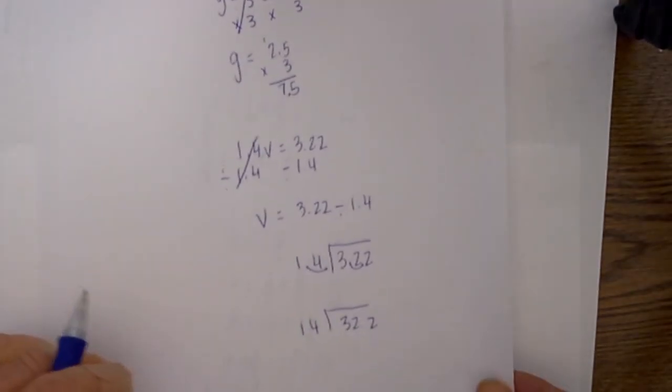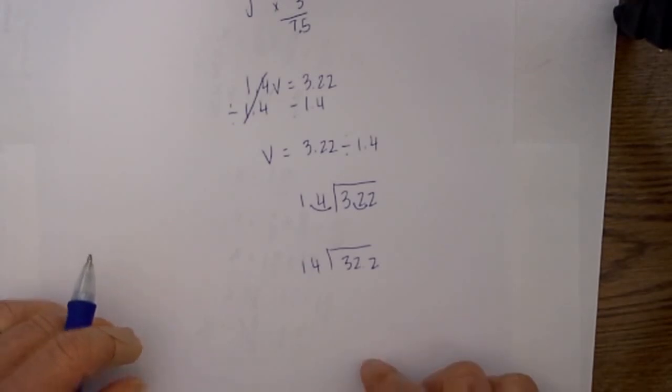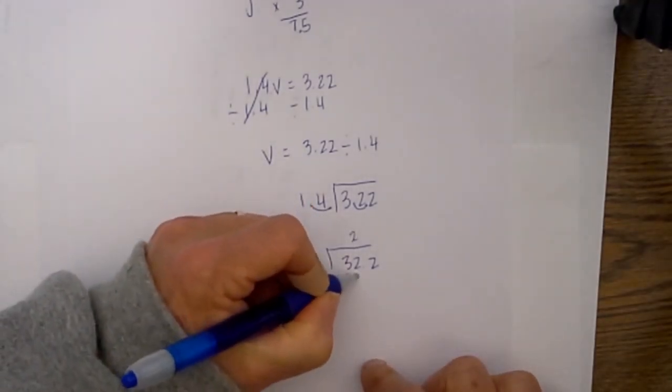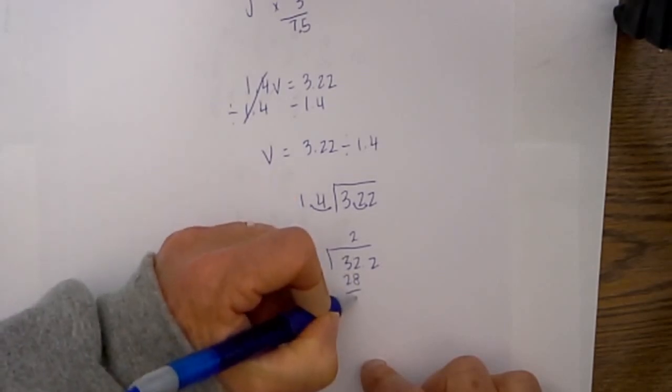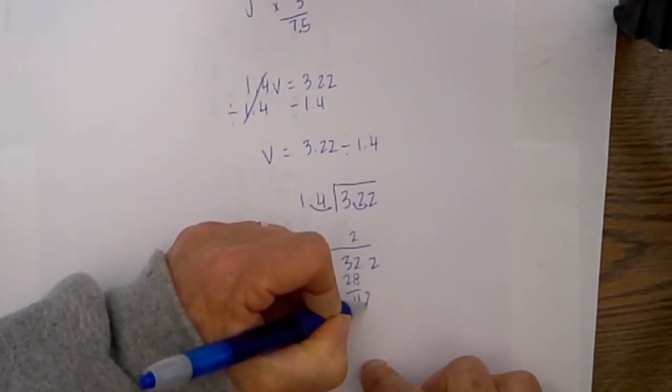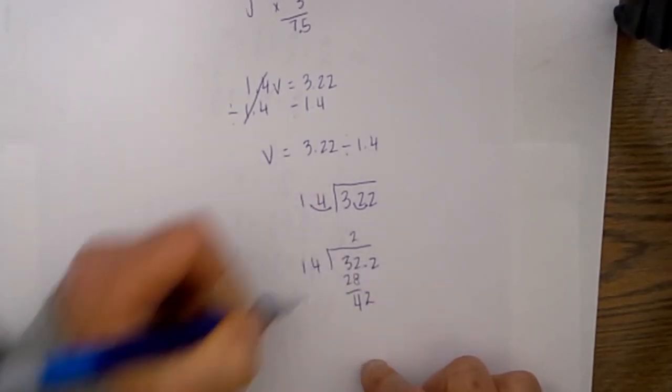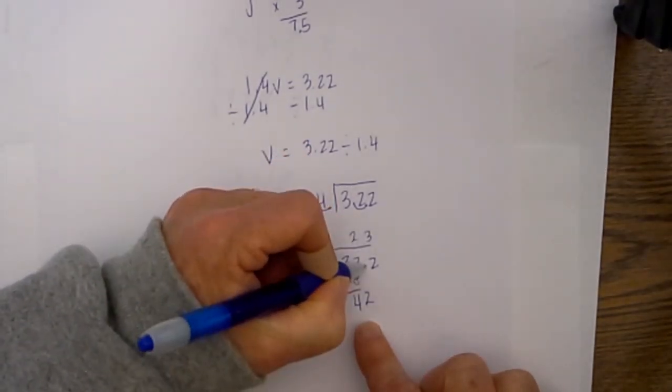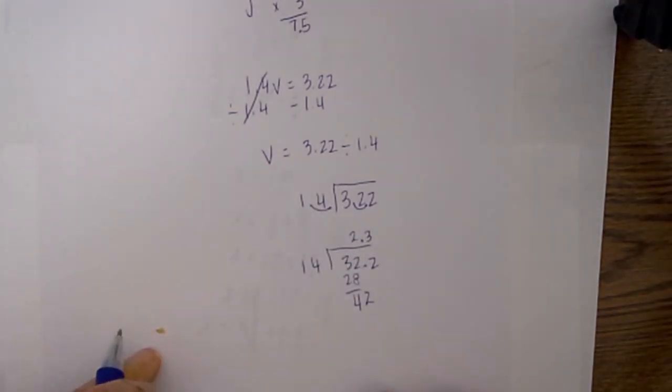I then just do the simple division. 14 will go into 32 two times, that is 28. 32 minus 28 is 4. Bring the two down so that will be 42. Remember the decimal place is right there. 14 into 42 will go 3, and the decimal is right there, so it will be 2.3. And finally for the last one let me grab another sheet of paper that is easy enough.